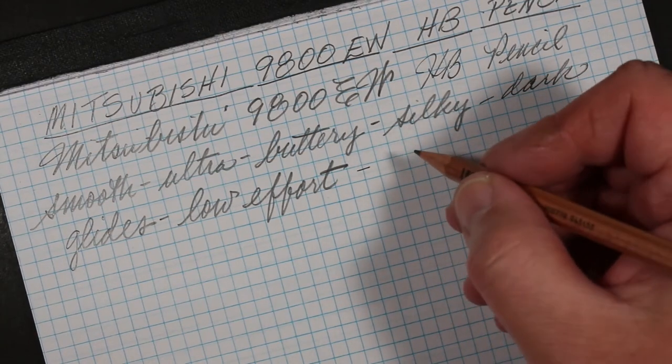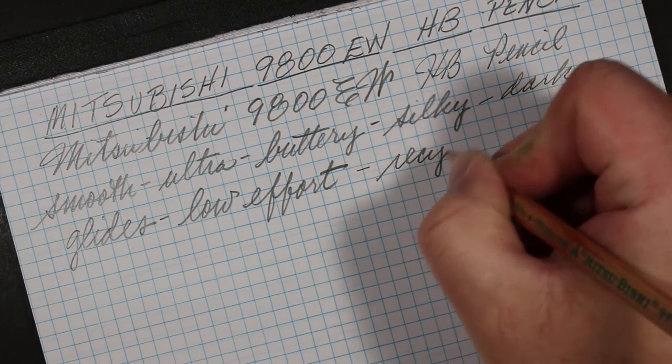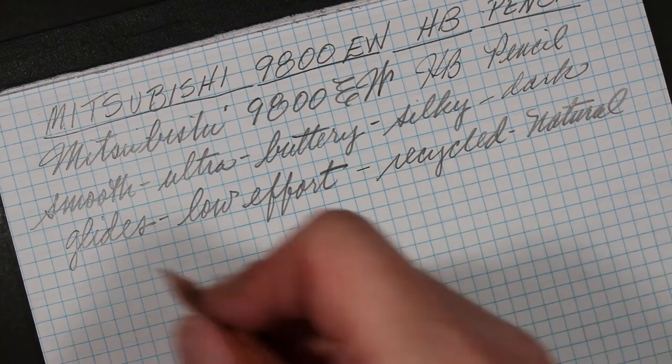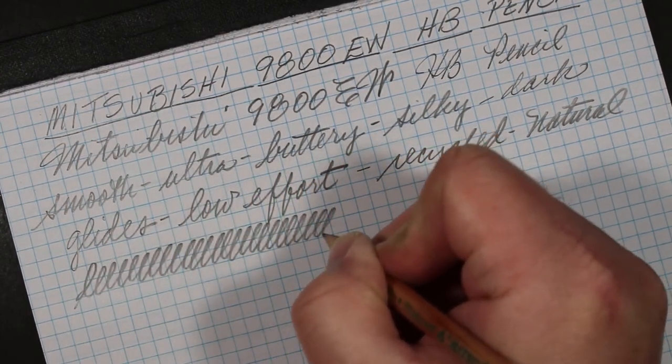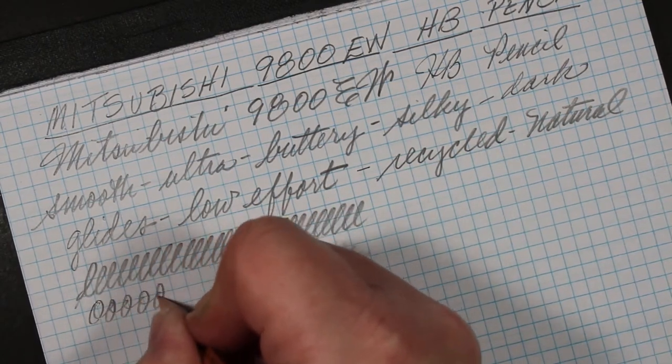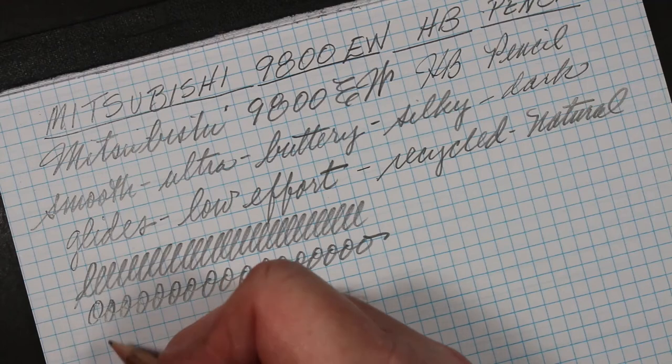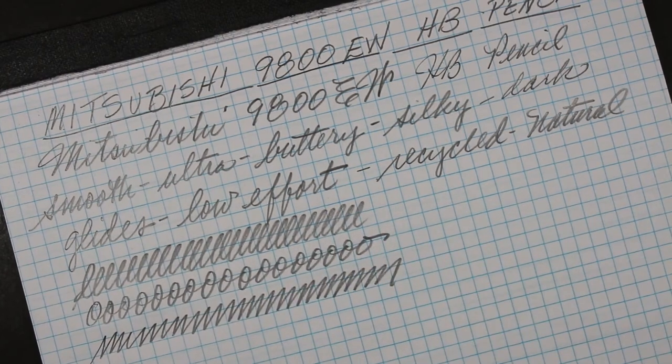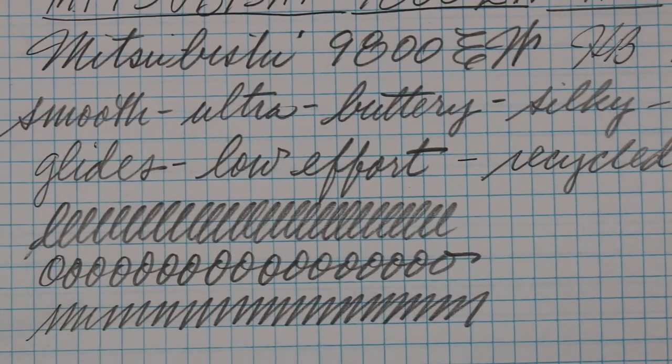I'm going to need to sharpen this up again here in a moment. But the line, as we might expect, is a little bit darker, a little bit softer than say an American or a German European HB. This tends to be the case with Japanese pencils. But as also the case with Japanese pencils, this is a delightful instrument to write with.